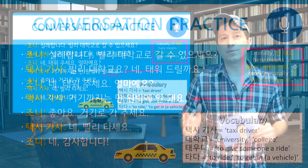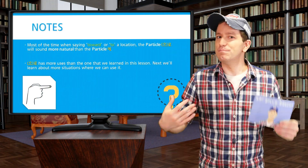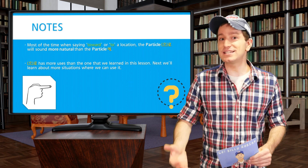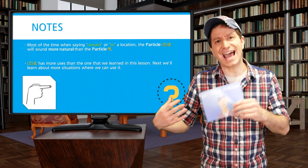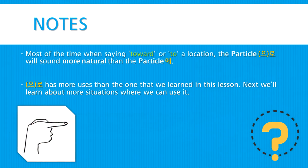Before we go, some quick notes about this particle. Most of the time, when you're just trying to say 'to' a location, 으로 will actually sound more natural than using the particle 에. So when you're trying to say 'to' or 'toward' a location, I recommend using 으로 instead of 에. This particle also has several more uses that we'll learn about in future lessons.